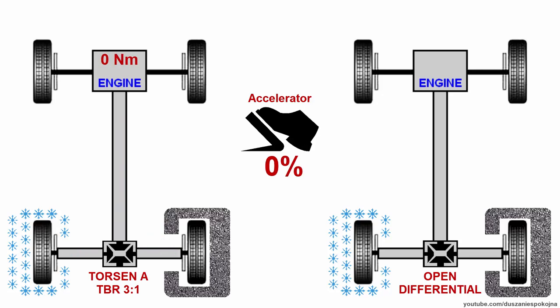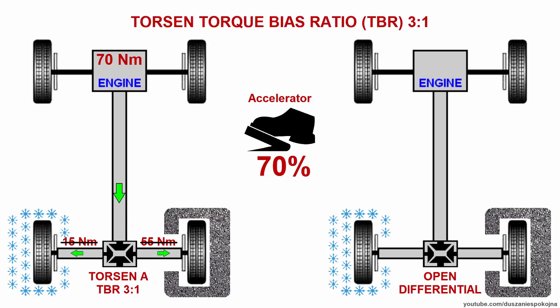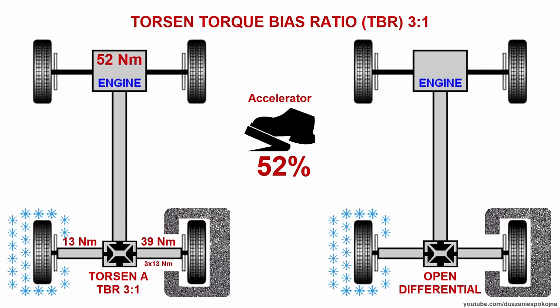What will happen if you press the accelerator pedal to 70% and try to create 70 Nm? Will 15 still go to the wheel on snow? No. Our Torsen has a 3:1 torque bias ratio, meaning it can send to one wheel up to 3 times more torque than to the other. So 15 to the left and 45 to the right is the maximum — if a total of 60 is exceeded, traction is lost. But the slipping wheel is still applying 13, so the other wheel applies 3 times 13, which is 39, giving 52 in total.